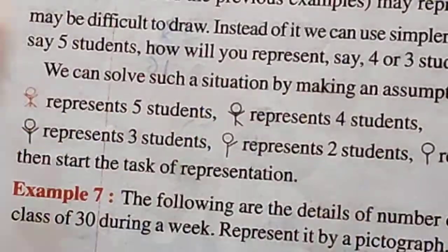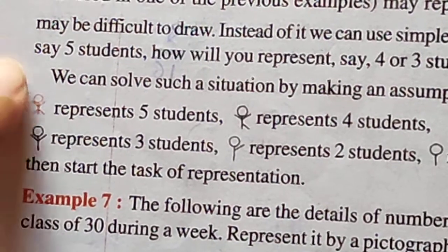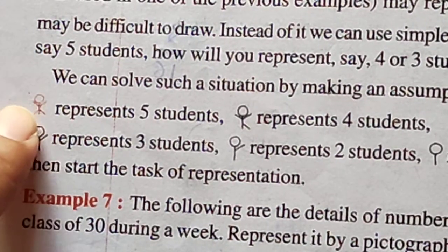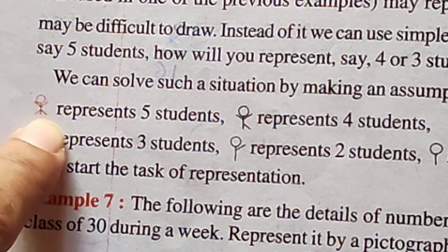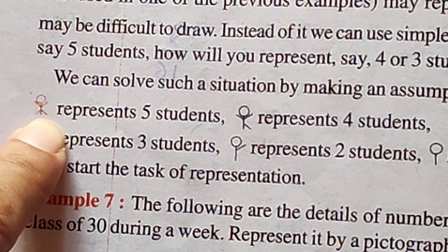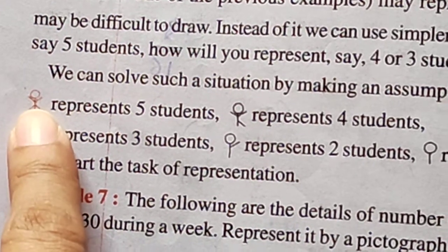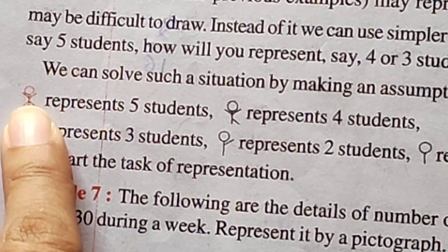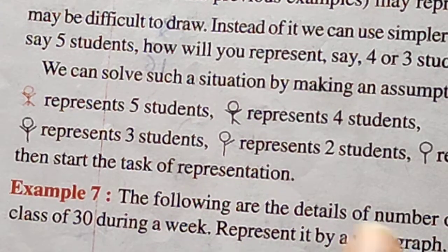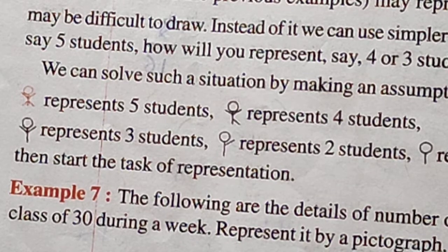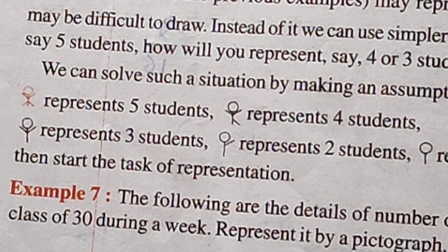So the body parts used are: the head means one, two hands and two legs — total five. So you remove one body part at a time. This type of pictograph we can use, or you can use a simple smiley instead.